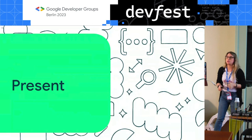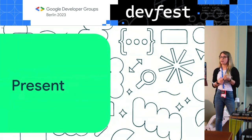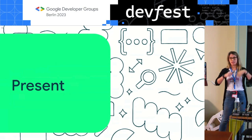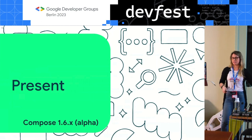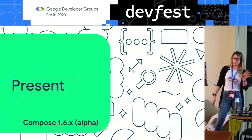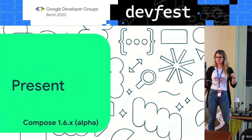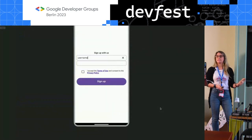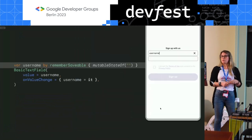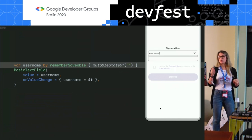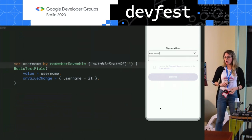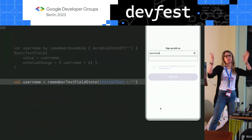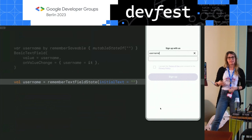So fast forward to the present onto the new APIs. What has the team done, and what do we have right now — by 'now' I mean Compose 1.6.x alpha, the alpha you can download right now. Let's say we're building a signup screen with two fields: username and password. Before, a quick recap: username by remember saveable and your mutable state — that's how you would define state. The first thing we need to do now is use a function called remember TextFieldState. This will create and remember a TextFieldState that will also survive process death because it uses remember saveable under the hood. It receives an initial text for convenience and an initial selection, both empty by default.